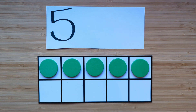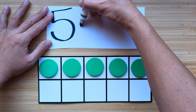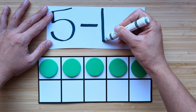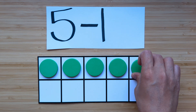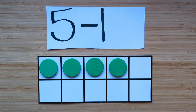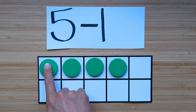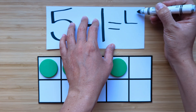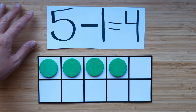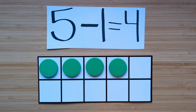What's one less than five? Point and count. One, two, three, four. Four is one less than five. Nice job.